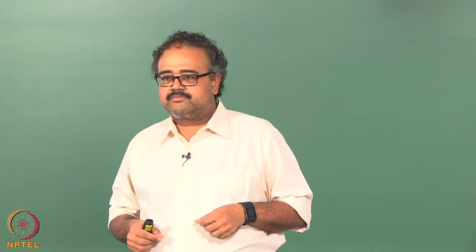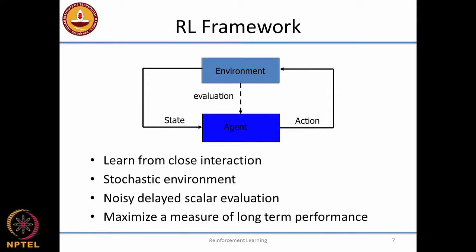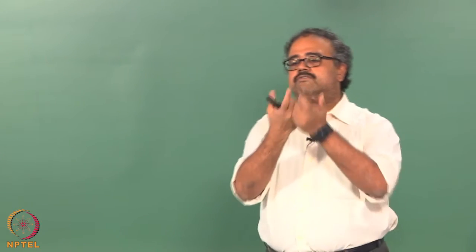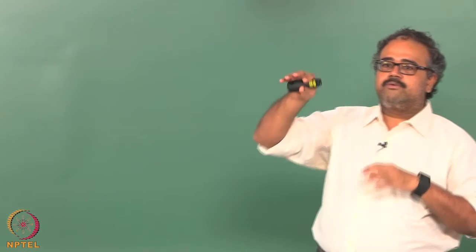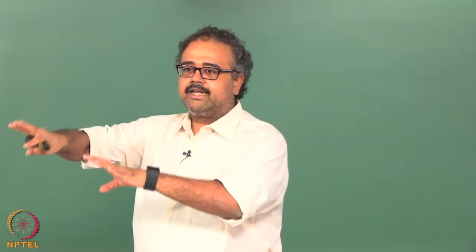Mathematically, a scalar is easier to optimize. Think of it as a cost function in control systems — you are trying to optimize the cost. If the cost were vector-valued, you'd have to trade off one dimension against another, and you get into Pareto optimality questions where it's not clear what 'optimal' even means.